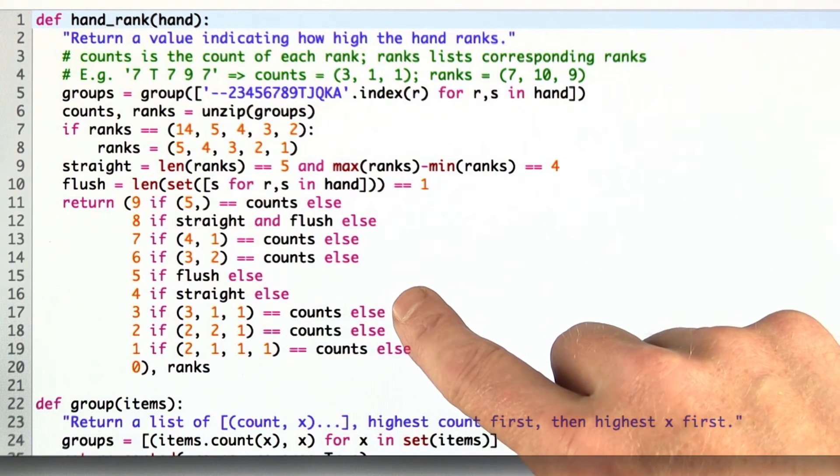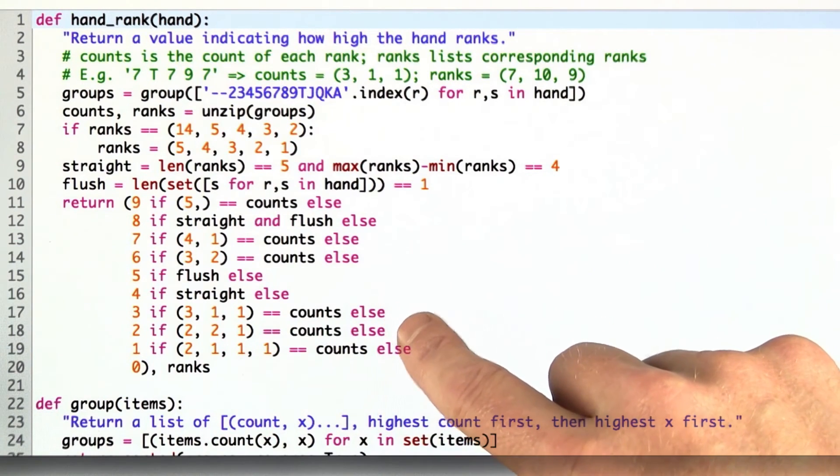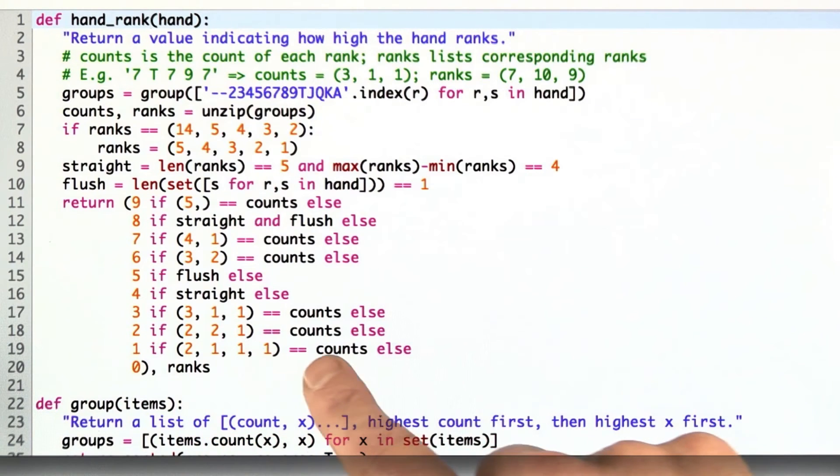Then we look for 3 of a kind. The only way to have 3 of a kind is 3, 1, 1. Two pairs has to be 2, 2, 1. One pair has to be 2, 1, 1, 1. Then high card would be 1, 1, 1, 1, 1. We don't have to explicitly check for that. We just have 0 as the final value.